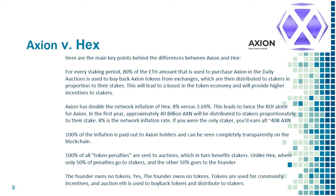Axion vs. HEX — here are the main key differences. For every staking period, 80% of the ETH used to purchase Axion in the daily auctions is used to buy back Axion tokens from exchanges, which are then distributed to stakers in proportion to their stakes. This leads to a boost in the token economy and provides higher incentives to stakers. Axion has double the network inflation of HEX: 8% versus 3.69%, leading to twice the ROI.